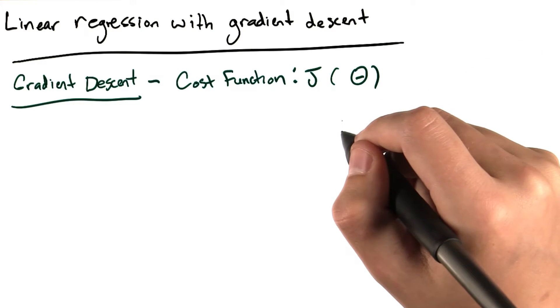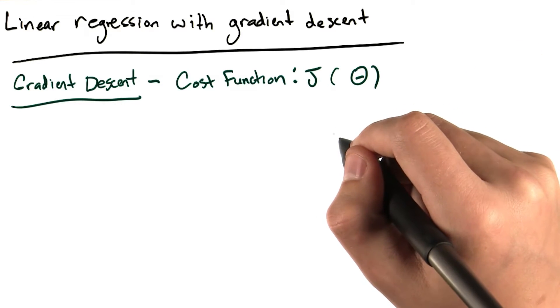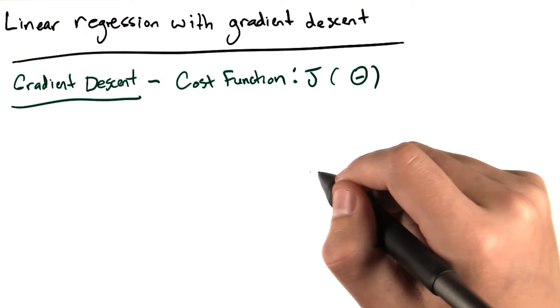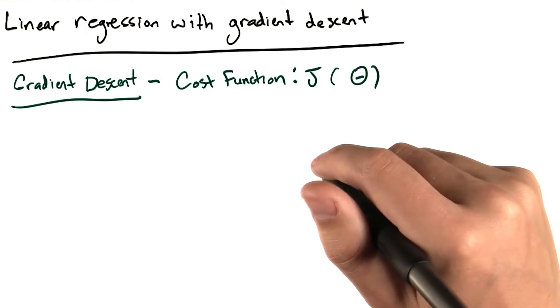The cost function is meant to provide a measure of how well our current set of thetas does at modeling the observed data. So we want to minimize the cost function's value.